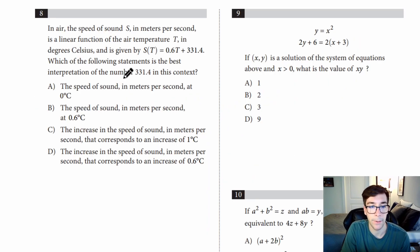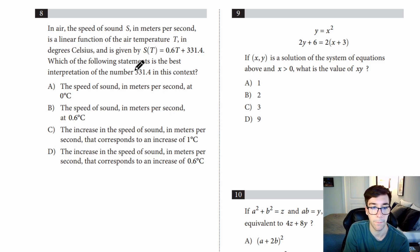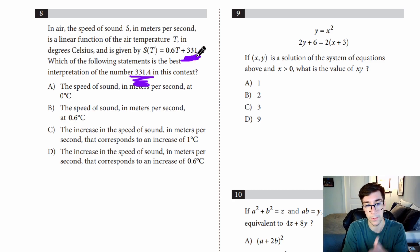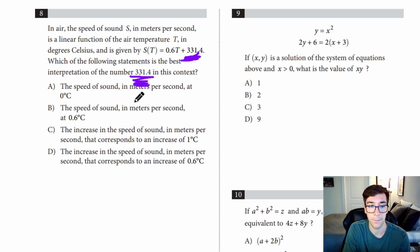Number eight: in air, the speed of sound S in meters per second is a linear function of the air temperature T in degrees Celsius, given by S of T equals 0.6T plus 331.4. Which statement is the best interpretation of the number 331.4? This number is the Y-intercept, so that means where it starts — the speed of sound in meters per second at zero degrees Celsius.